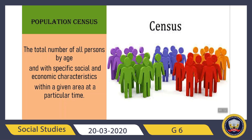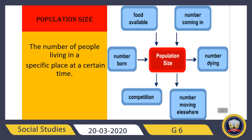Memorize these definitions for your semesters which might be coming soon. Let's begin with the first definition: Population Census. We already covered it in our classes in great detail, but today I'm going to read it for you. The total number of all persons by age and with specific social and economic characteristics within a given area at a particular time is called Population Census.